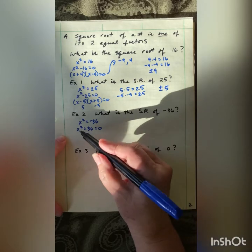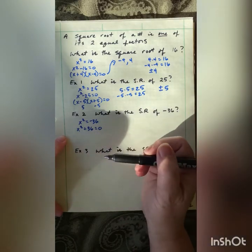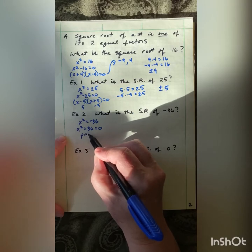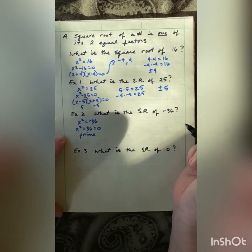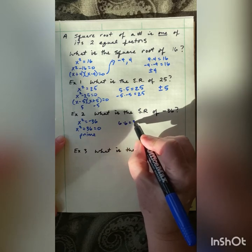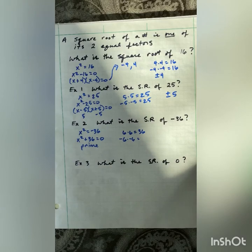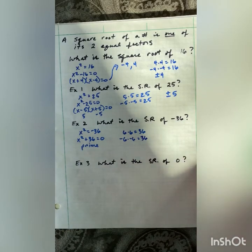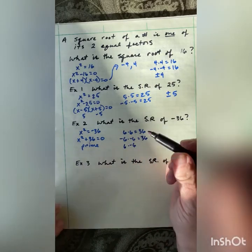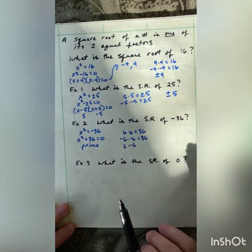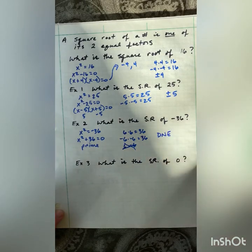Remember when we were doing these problems and trying to factor — if we had the sum of squares, we could not factor it, that was prime. We can't do this problem. Students might say it's 6, but 6 times 6 equals 36. Negative 6 times negative 6 also gives me 36, and I'm looking for negative 36. How about 6 and negative 6? The thing is, these factors have to be the same — it's one of its two equal factors. So we can't use that. In this case it does not exist.